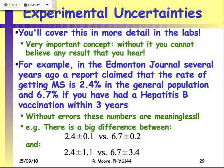If you miss uncertainties out, you run into problems. For example, the Edmonton Journal reported that the rate of getting MS is 2.4% in the general population, but 6.7% if you've had a hepatitis B vaccination within three years. But that tells you absolutely nothing — there is zero information in that statement because neither of these numbers have uncertainties.